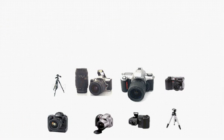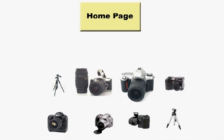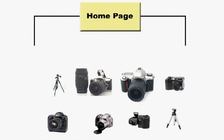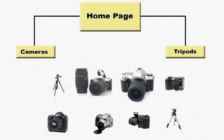So, to organize your store, Yahoo! allows you to create sections. When you create sections, you place products in groups. We can separate our cameras from our tripods by creating two sections, called cameras and tripods.